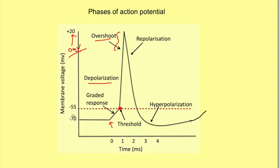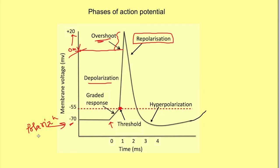At RMP the membrane is minus 70 millivolts — negative with respect to outside. During depolarization it becomes less and less negative, and once it crosses zero millivolts the membrane has become positive with respect to outside — this component is the overshoot. After that the potential starts to come back to resting membrane potential — this phase is known as repolarization. When the potential comes back towards RMP from the depolarized state it is known as repolarization because coming back towards the polarized state is repolarization.